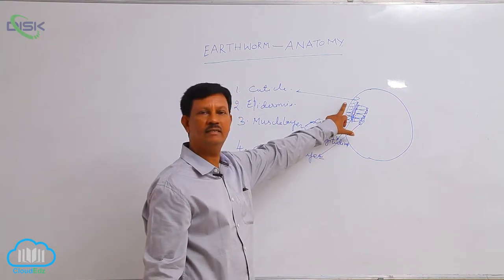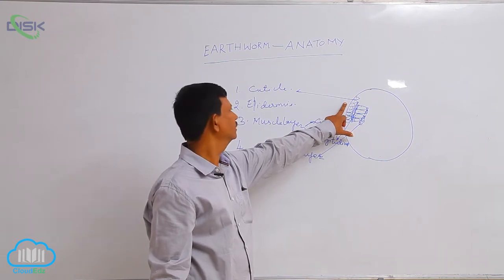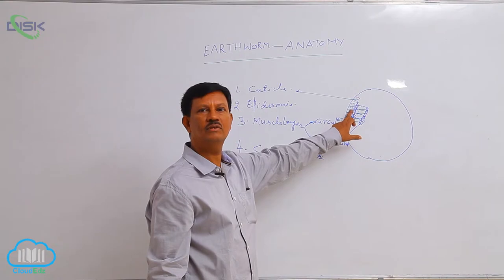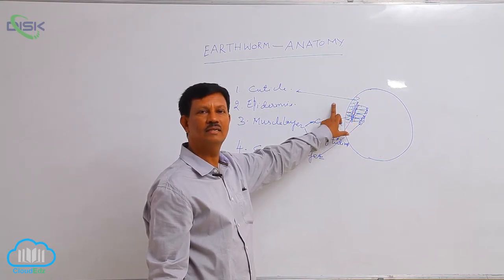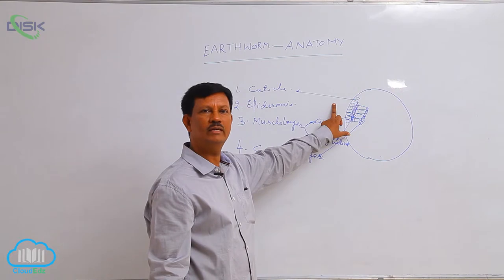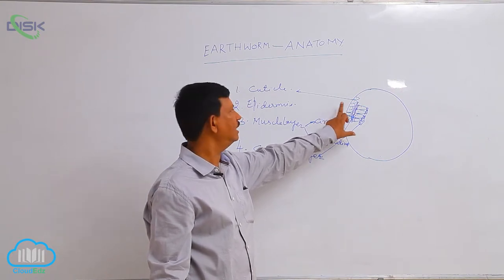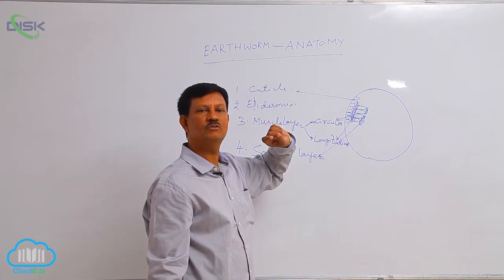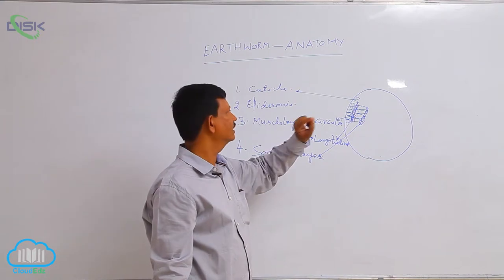The outermost layer is the cuticle — it is a thin, non-cellular layer that gives protection to the body. Below the cuticle, a single layer of epidermis is present. Epidermis consists of two types of cells: columnar epithelial cells and glandular cells. The glandular cells secrete a mucous substance, which is why the earthworm's skin is always moist and useful for respiration.